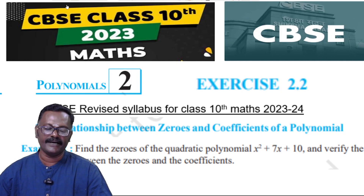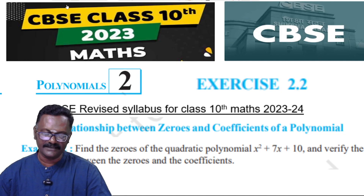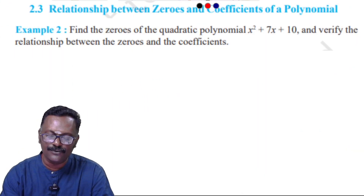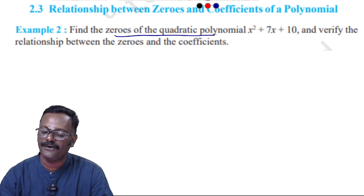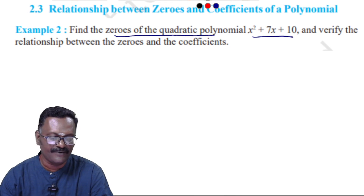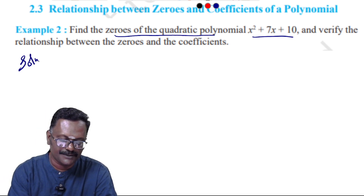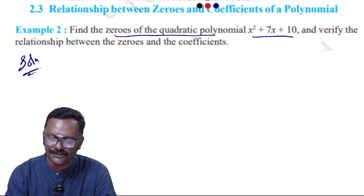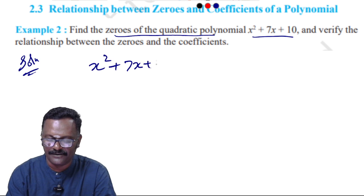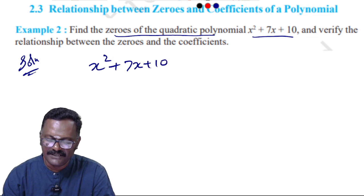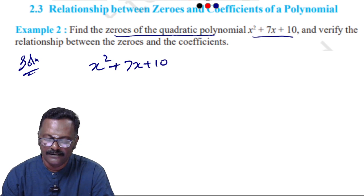Hi students, welcome to my channel Study Care. We are seeing basic Class 10 Math Chapter 2 Polynomials, Example 2. We need to find the zeros of the quadratic polynomial and verify the relationship between the zeros and the coefficients. The quadratic polynomial is x² + 7x + 10. First, we need to factorize it.